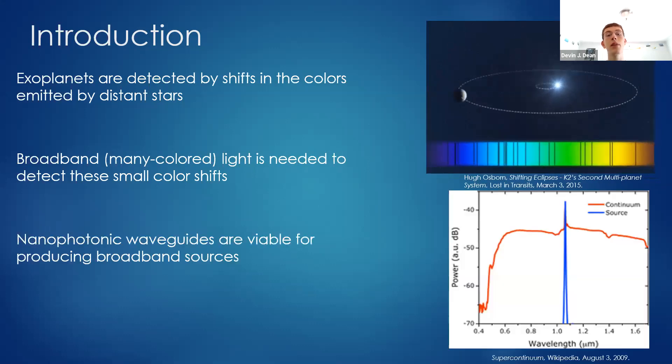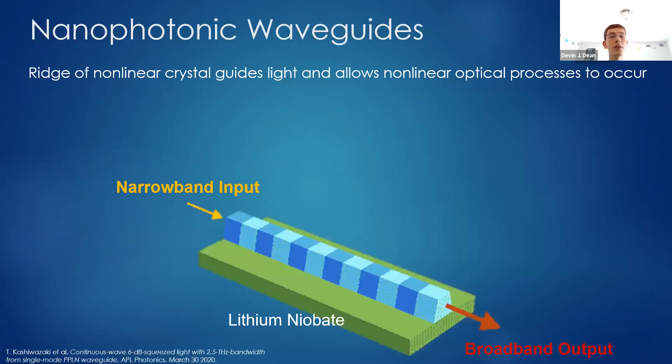A multicolored light source or broadband light source can be created with one class of devices called nanophotonic waveguides, and their goal as a black box is to take a single color input and produce a many colored output.